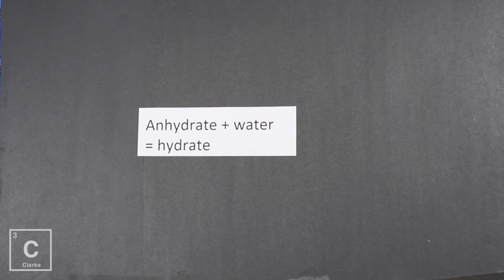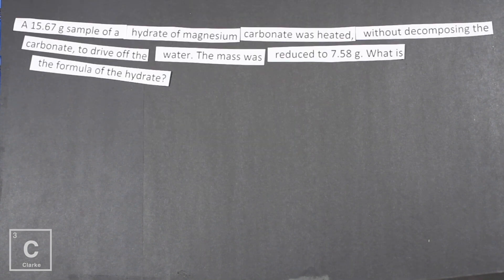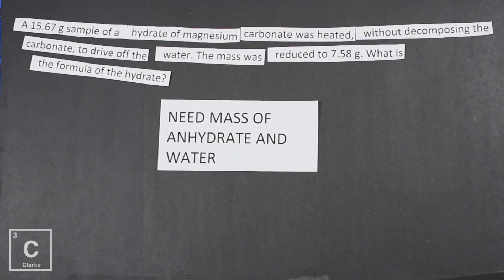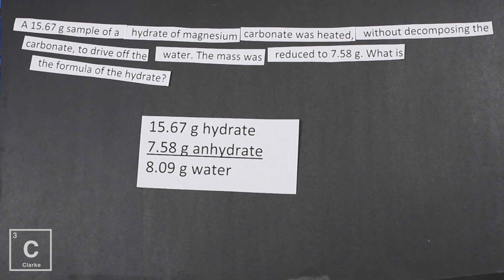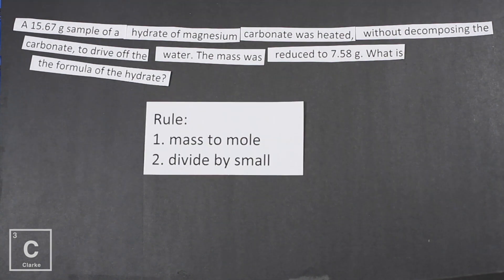Let's go ahead and start our first example. A 15.67 gram sample of a hydrate of magnesium carbonate was heated without decomposing the carbonate to drive off the water. The mass was reduced to 7.58 grams. What is the formula of the hydrate? Don't let this long question overwhelm you. We need the mass of the anhydrate and the water to work the problem. Sometimes it might be given to you; other times you might have to do a little subtraction to figure those numbers out.